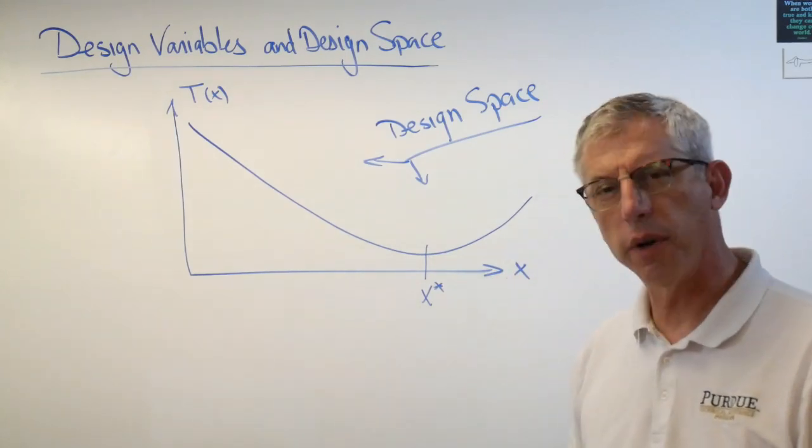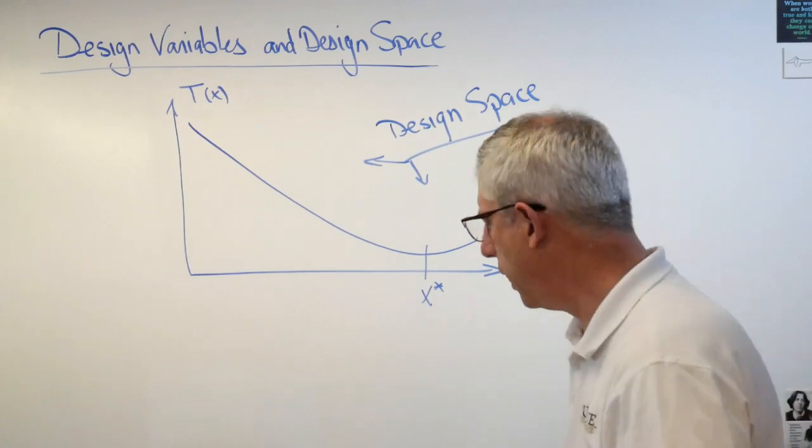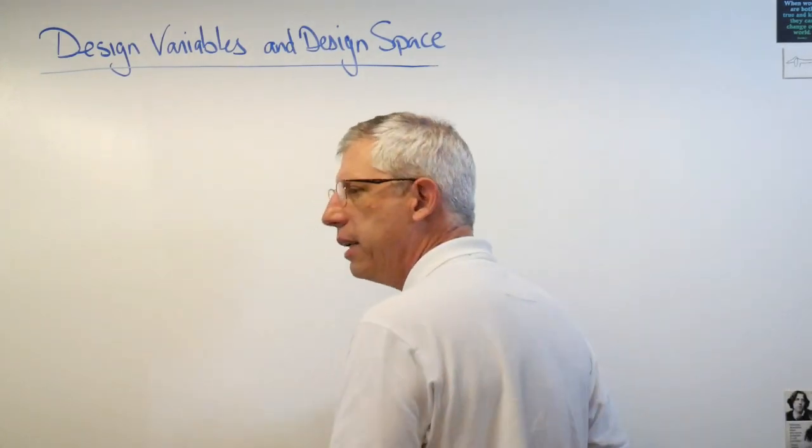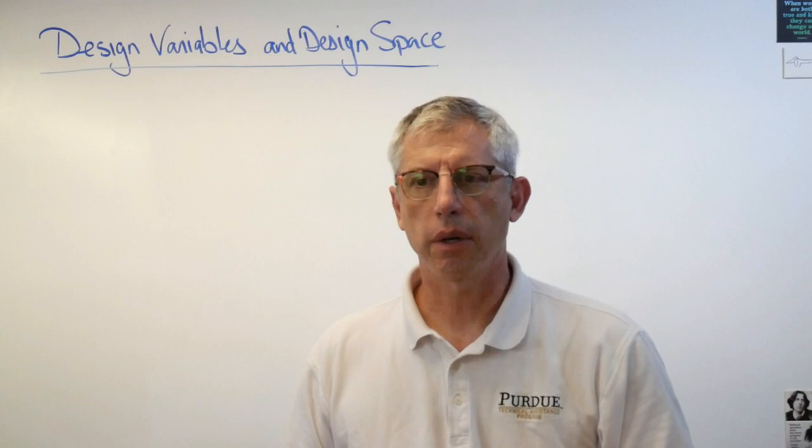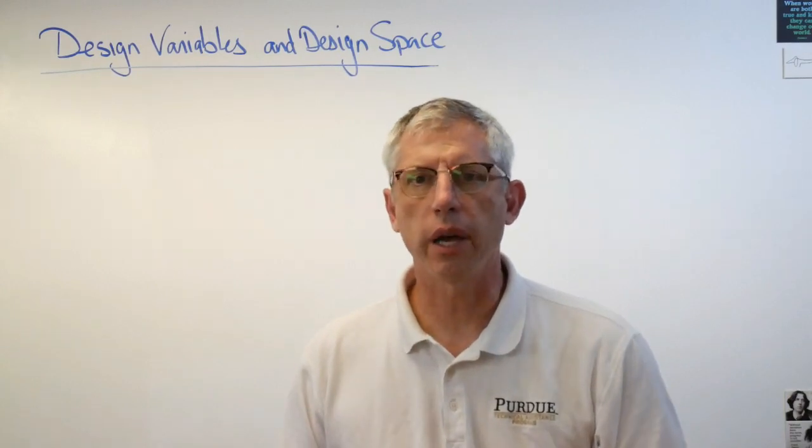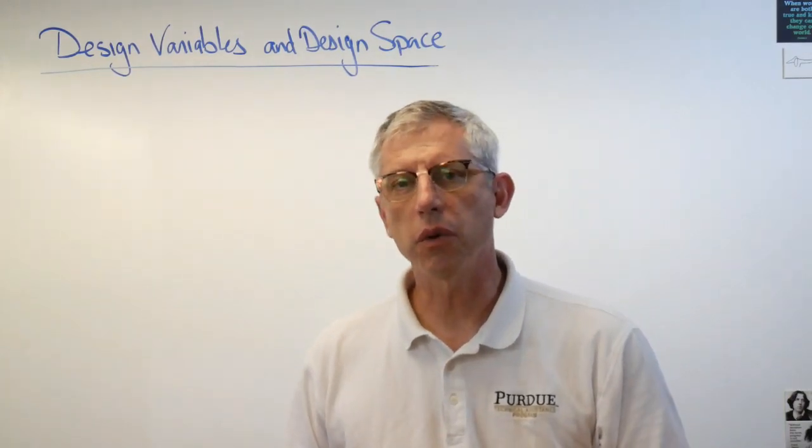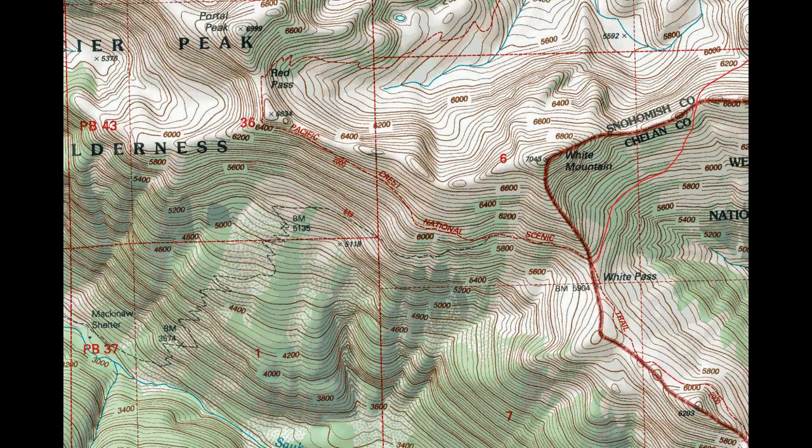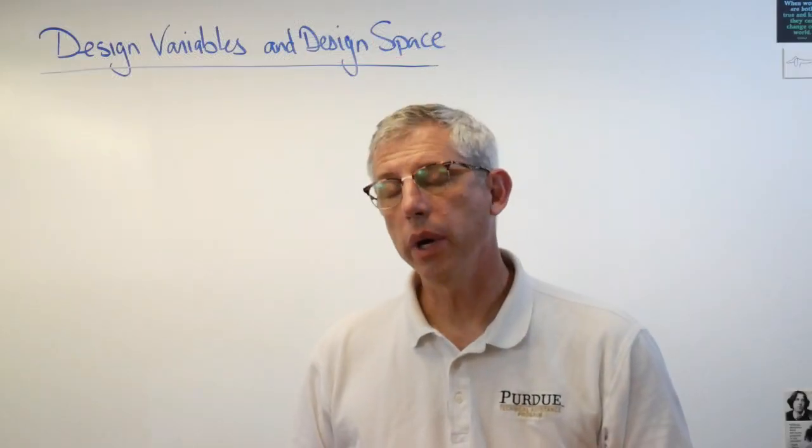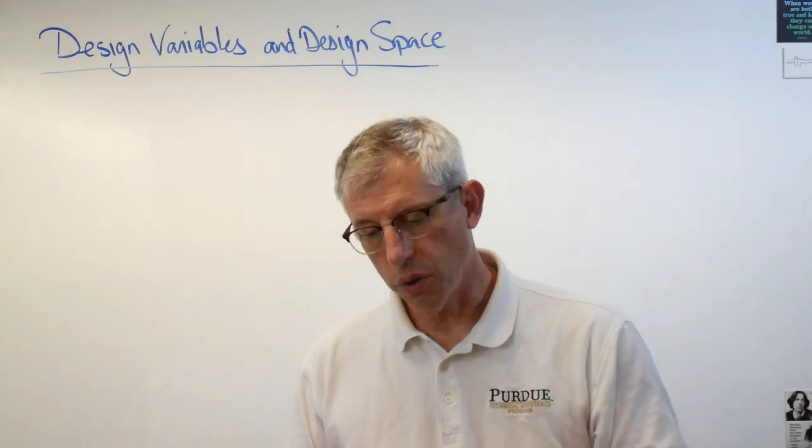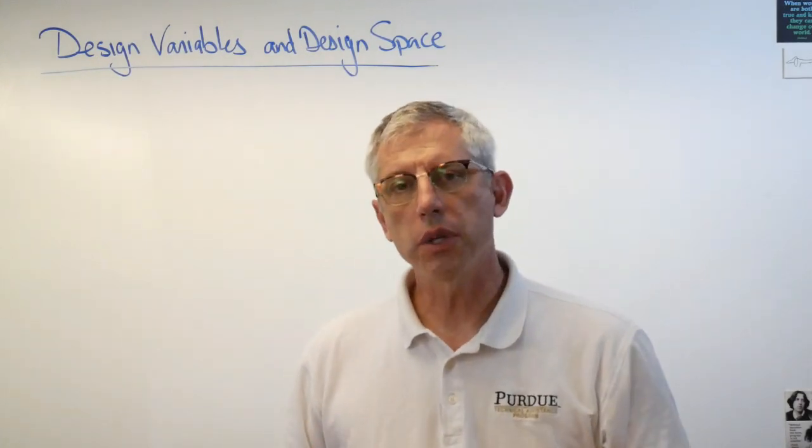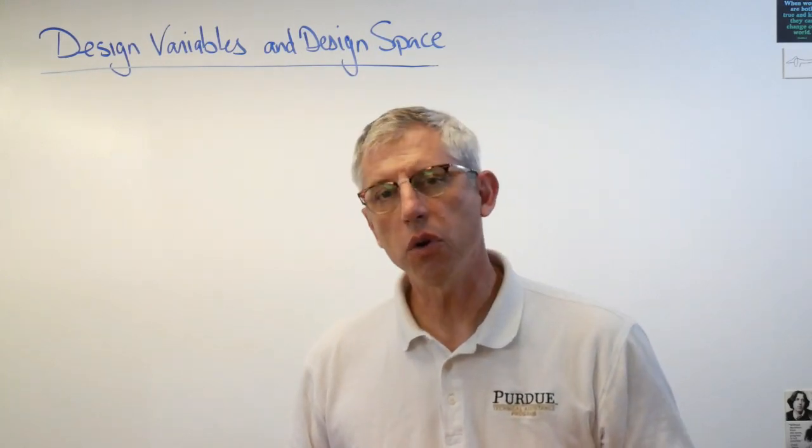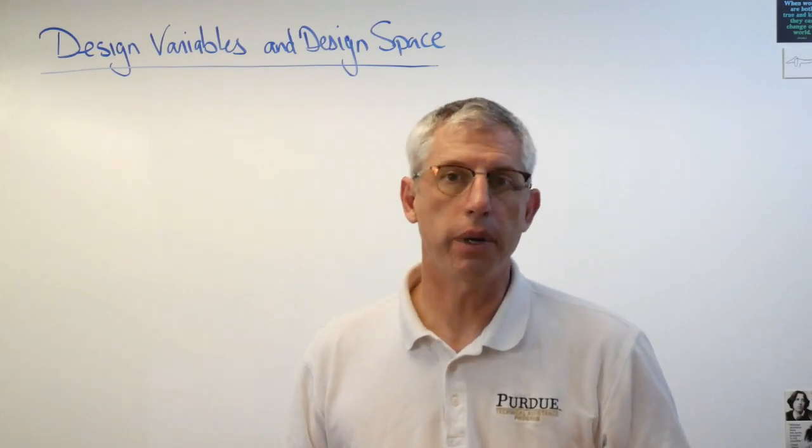So this is what design space looks like for a single variable problem. What might it look like for a two variable problem? Well have you ever seen a topographic map of a hillside or a piece of land? If you haven't seen one before hikers use these a lot and they look like this. That's a topographic map. What you're seeing is those lines, those circles, those closed loops, those represent curves of equal height above sea level. So every time you cross one of those lines you're going either uphill or downhill.